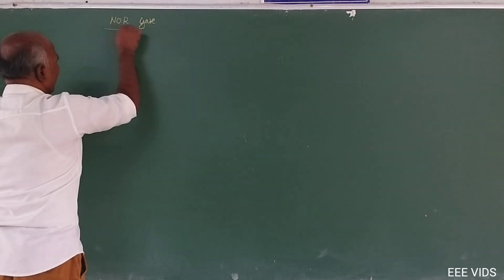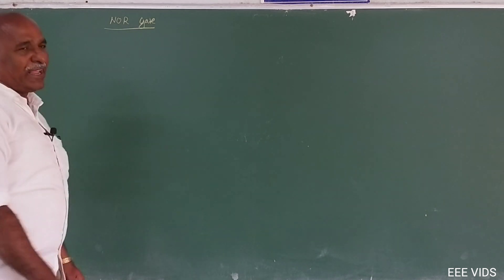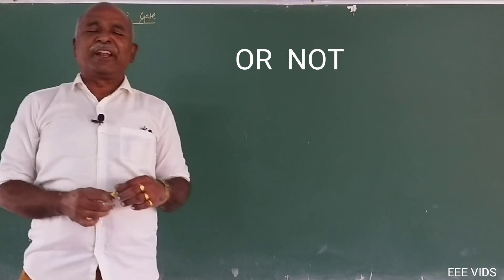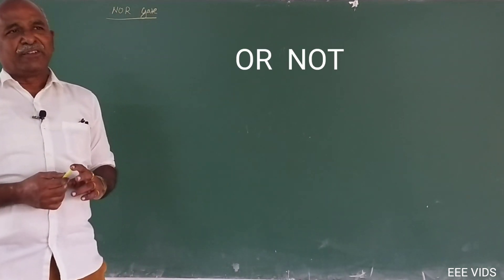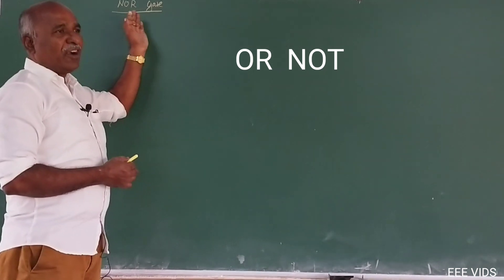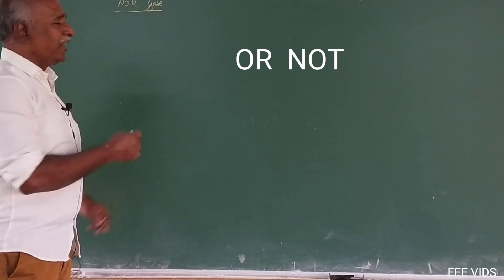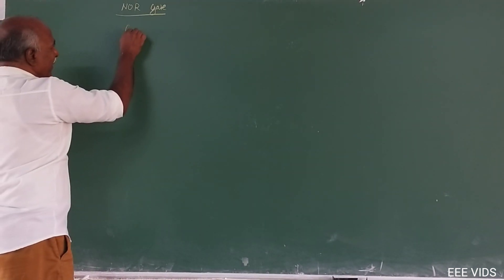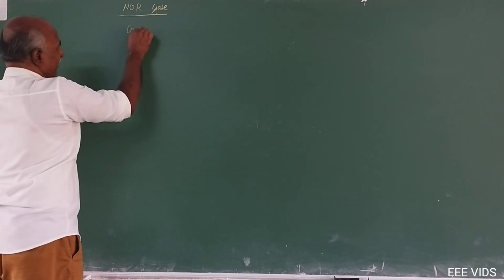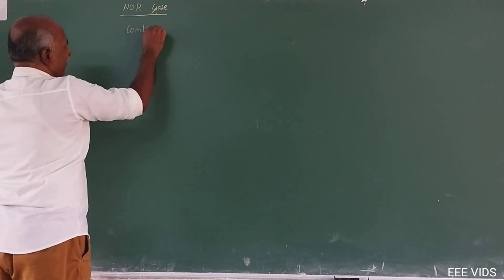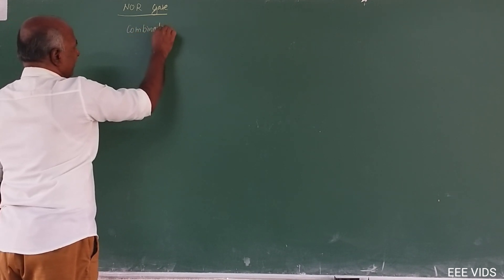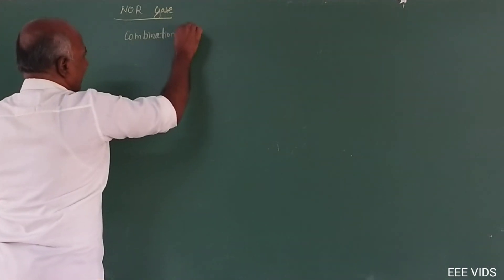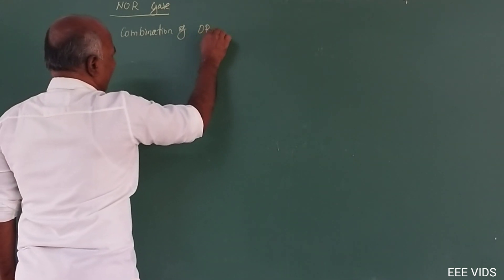So from the name, N indicates NOT, OR indicates the OR. So it is a combination of NOT and the OR gate. NOR gate is the combination of OR and NOT.